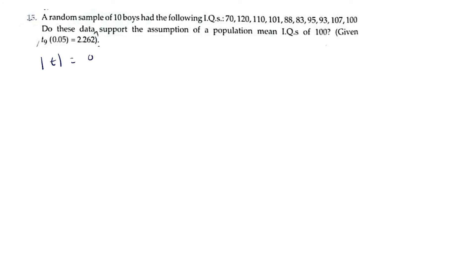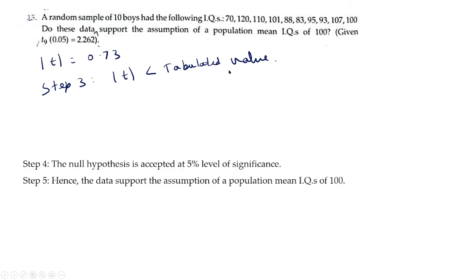Step 3: we compare the calculated value of t with the tabulated value. The table value is 2.262. Therefore, |t| = 0.73 < 2.262, the tabulated value at 5% level of significance. So the null hypothesis is accepted at 5% level of significance. Hence the data support the assumption of a population mean IQ of 100. This is how we proceed when the sample data is given.